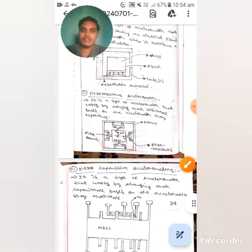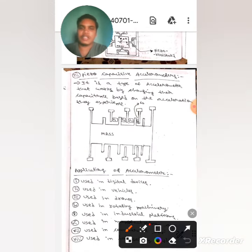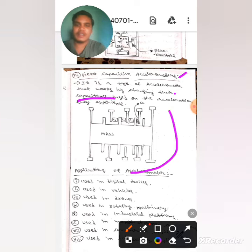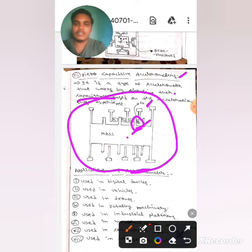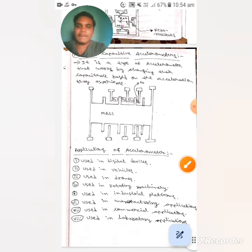The next one is capacitive accelerometer. It is a type of accelerometer that works by changing the capacitance based on the acceleration they experience. If you observe here, this whole diagram represents capacitive accelerometer. Here I wrote C2 in the above as the space is not there, but in the exam you should write here only.